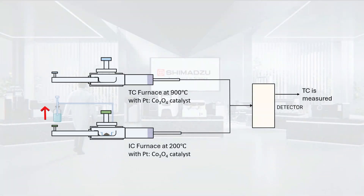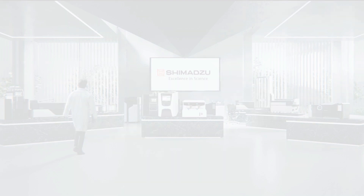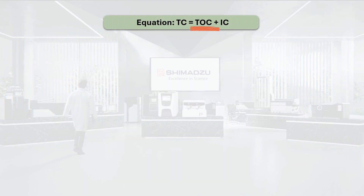When the acid is dispensed, it is directed into the sample boat, where it reacts with the sample. At this moment, the sample boat is pushed into the furnace compartment immediately. The reaction produces carbon dioxide and water. The carbon dioxide is sent to the detector for measurement, and finally the IC content of the solid sample can be obtained.